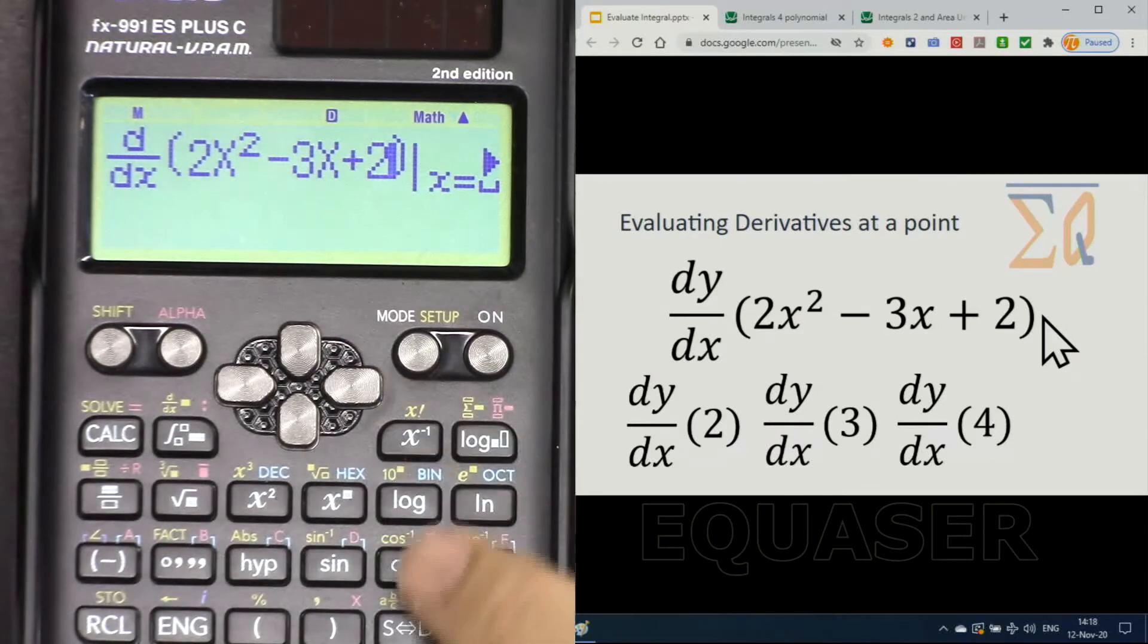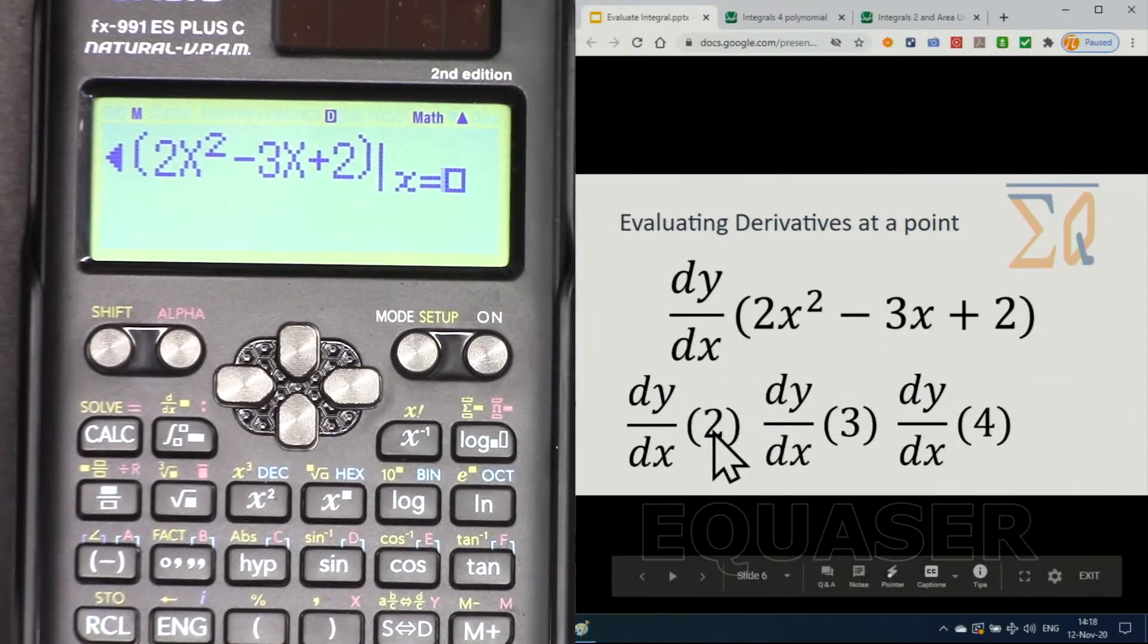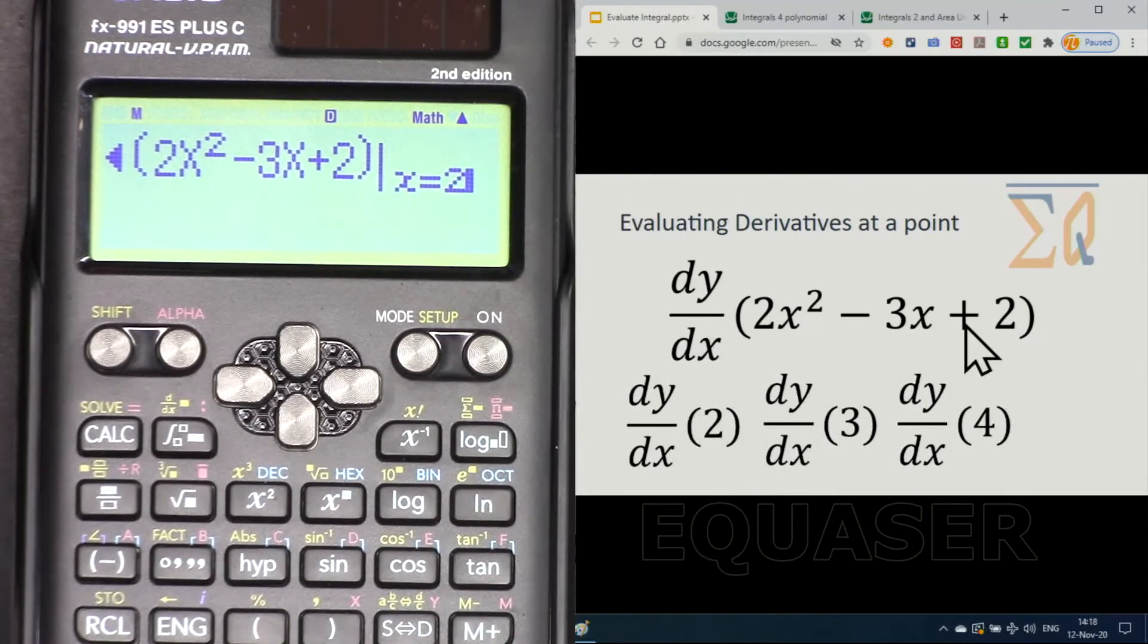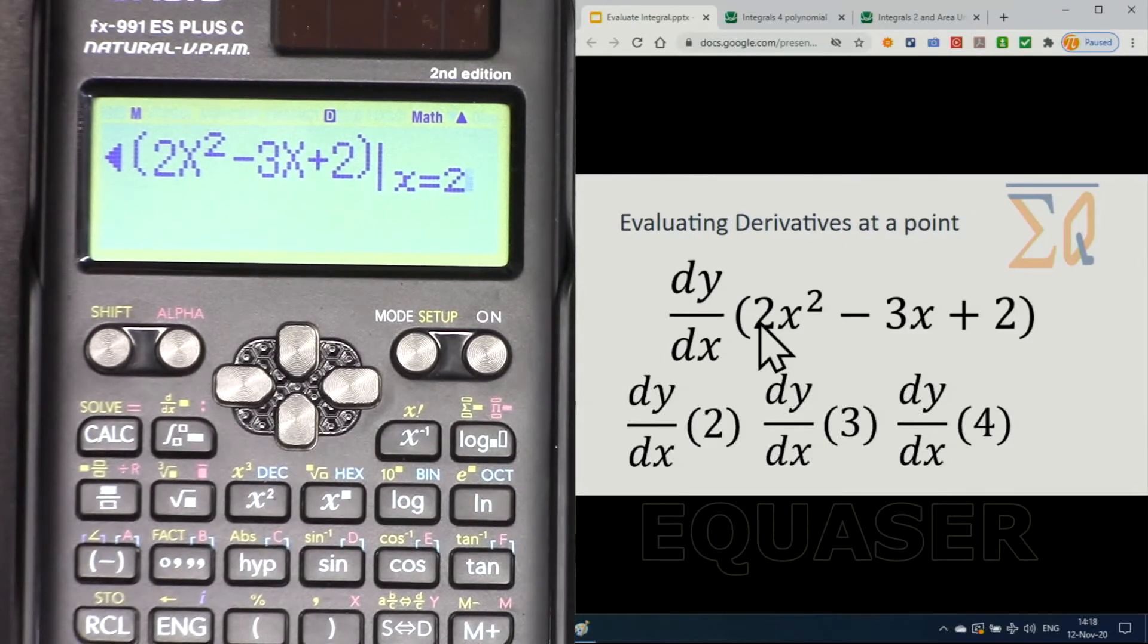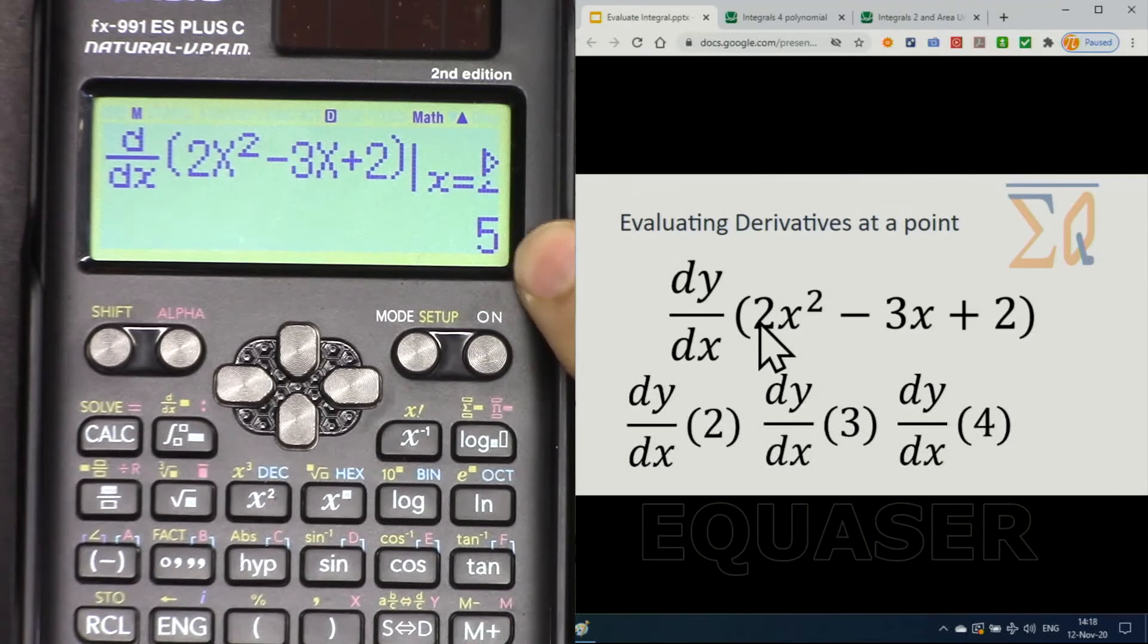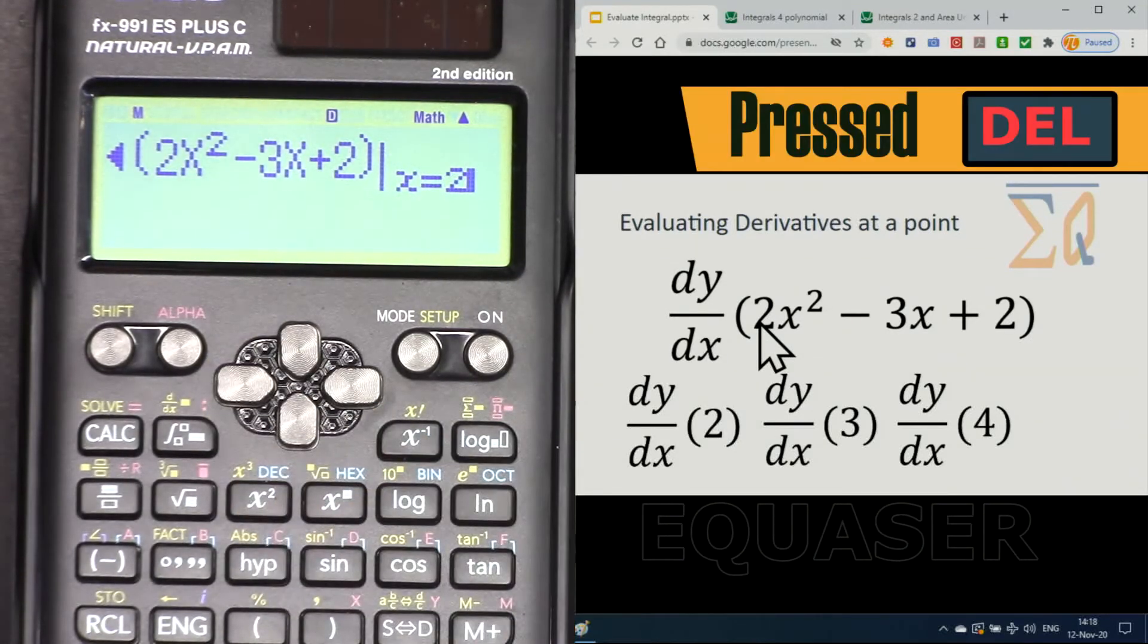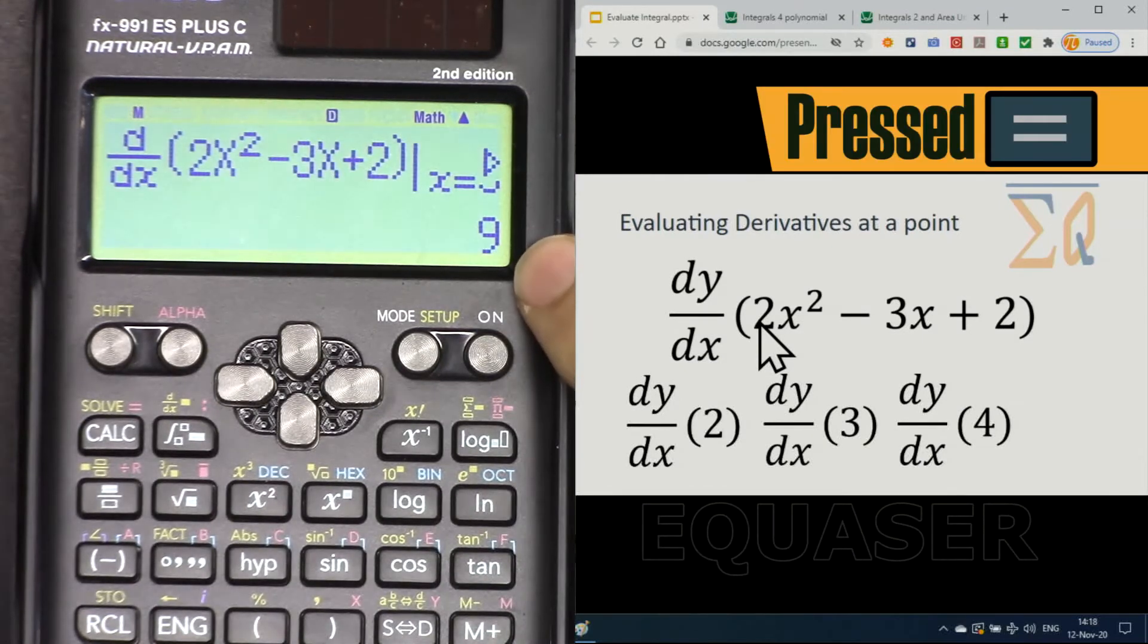So what it does is it takes the derivative and then plugs in the 2 into the result of the derivative. Here, the answer is 5. Go to the left with arrow, and again, back, edit it with 3, and it is 9. And let's go with a 4. Go to the left twice, delete, 4,